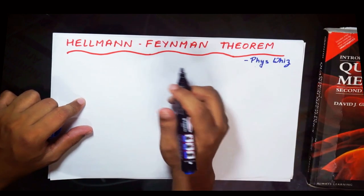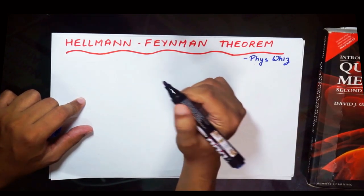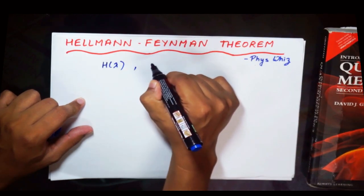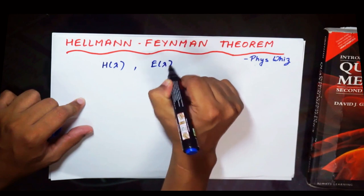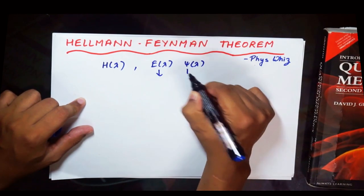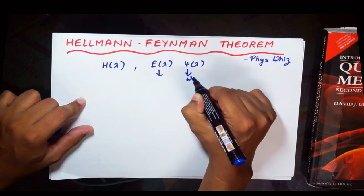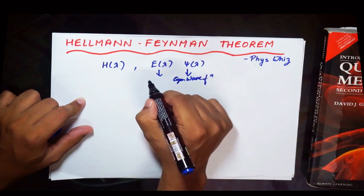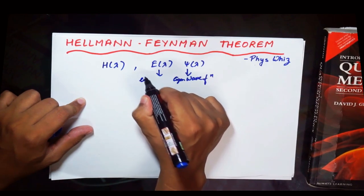So the Hellmann-Feynman Theorem basically states that if the Hamiltonian is a function of some parameter lambda, and E of lambda and psi of lambda are its eigenvalues as well as the eigen wave functions, that is eigenwave function and eigenvalues.